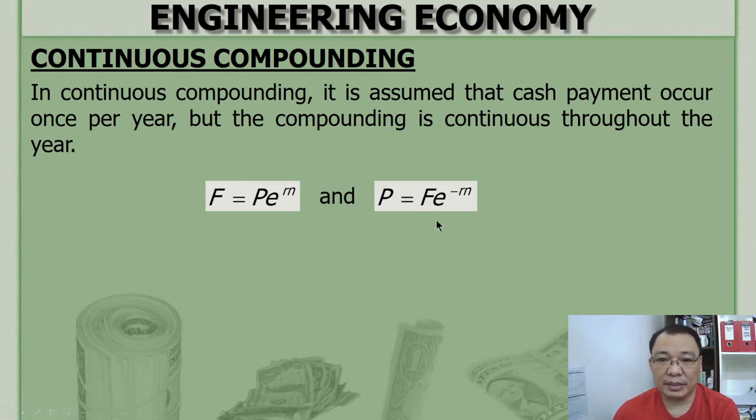Same as discrete compounding. Now when you solve for F, compound amount factor, and then this one, present worth factor.